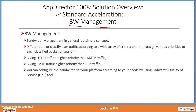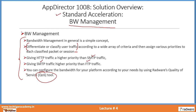Sometimes there is a development team and you would like to give them unrestricted internet with the best bandwidth available. This is how we differentiate or classify user traffic according to their roles, functions, and need. For example, giving HTTP traffic higher priority than SMTP traffic, and giving SMTP traffic a little higher priority than FTP. You can configure the bandwidth for your platform using Radware's Quality of Service tool to prioritize and classify user traffic as per their roles.